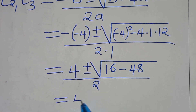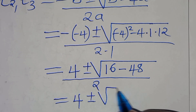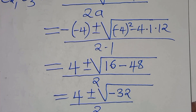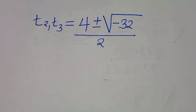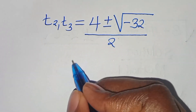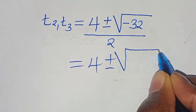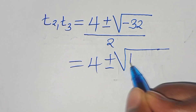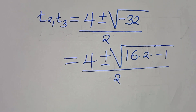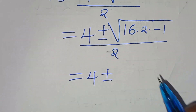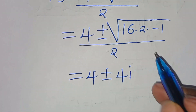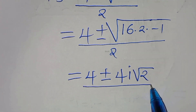So we have 4 plus or minus the square root of 16 minus 48, which is minus 32, divided by 2. We can express the square root of minus 32 as the square root of 16 times 2 times minus 1, which gives 4 times i times the square root of 2. So t₂ and t₃ equal 4 plus or minus 4i root 2, divided by 2.